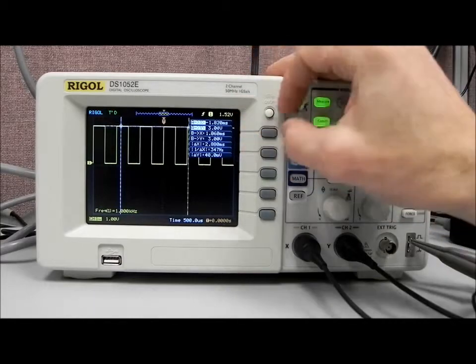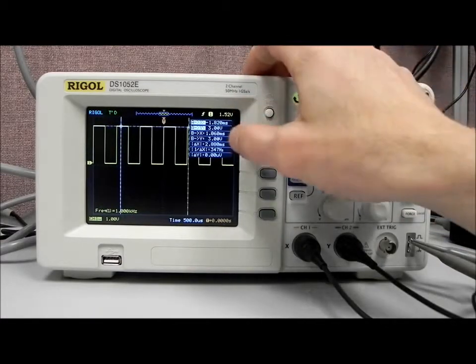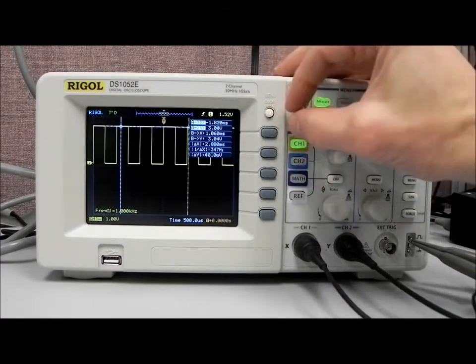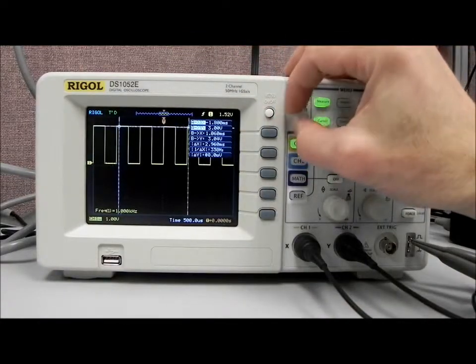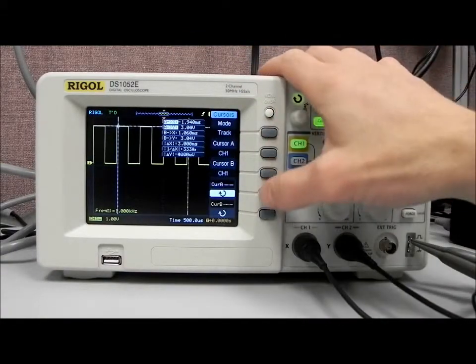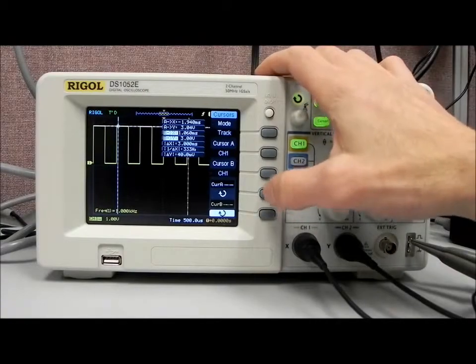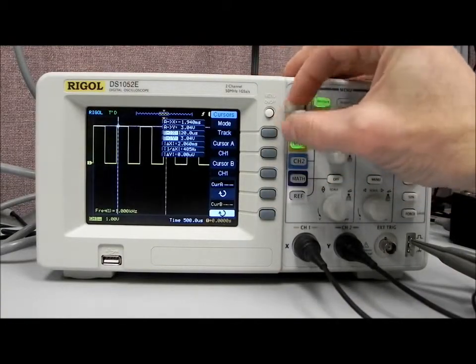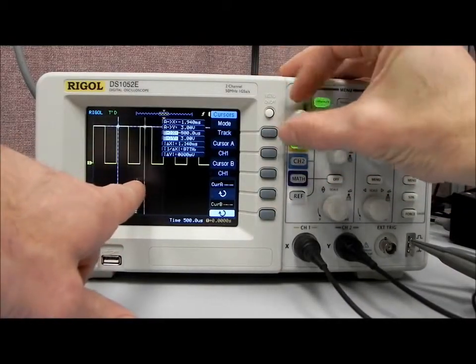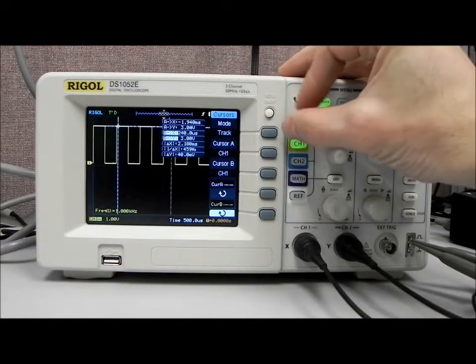And so you can also see over here we're getting some measurement changes in delta X and delta Y, corresponding to the position of that particular cursor. We can go back and highlight B, and that's going to allow us to move the second cursor. And we'll get that delta between those in both X and Y.